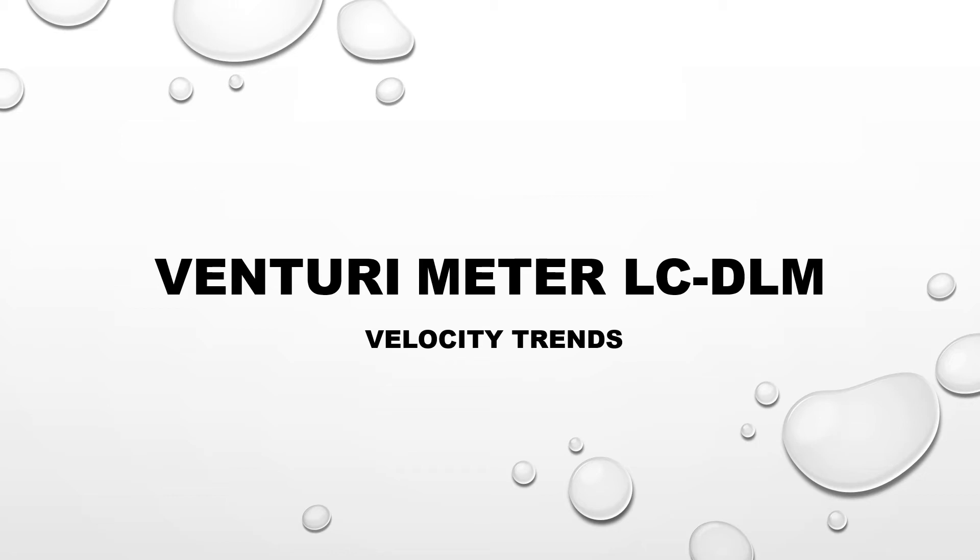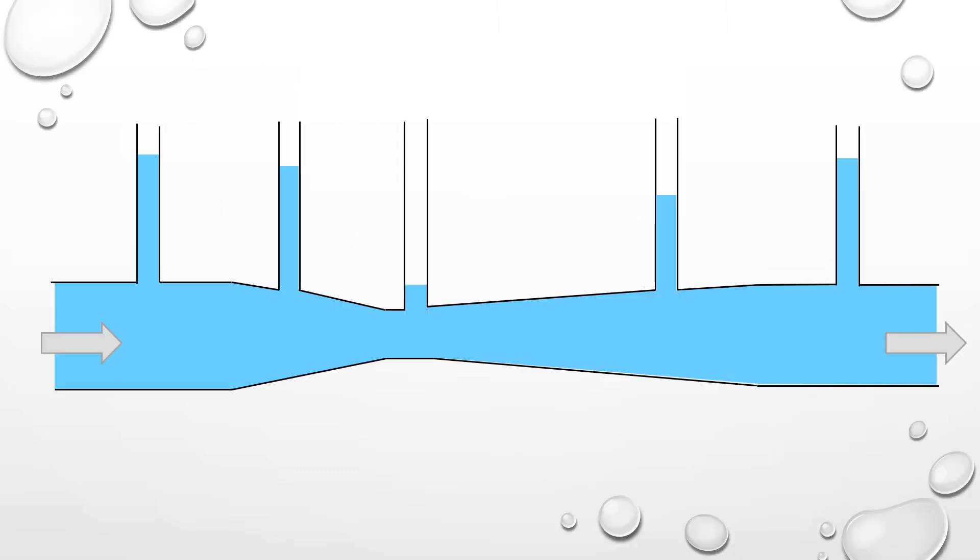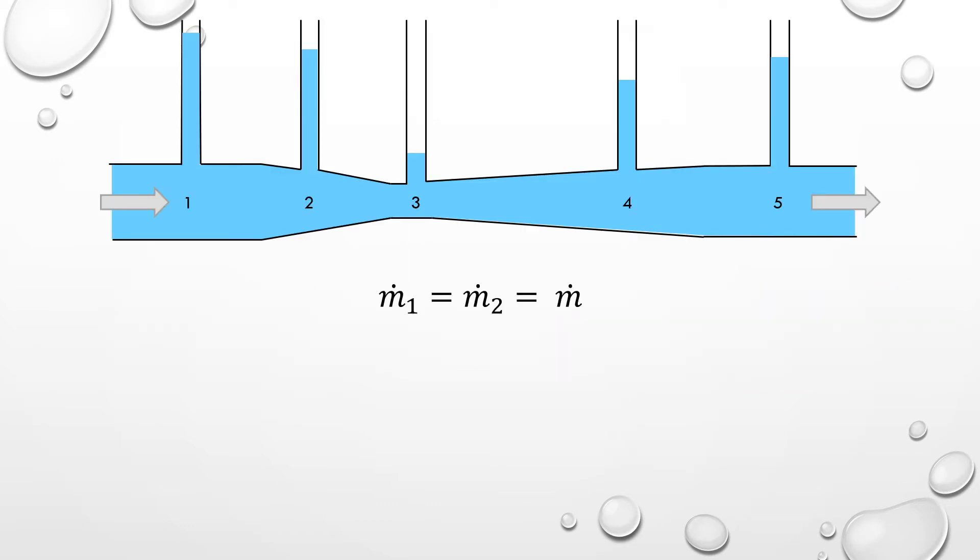Let's consider the velocity trend for fluid in a venturi meter with a changing diameter. We're going to derive the velocity in the venturi using the principle of mass conservation, or continuity. From basic principles, we know that mass cannot be created or destroyed. We also know that for a steady state process, there is no accumulation of mass in the system over time. Applying these principles to water flowing in a venturi, we can say that the mass flow rate at any two points in the venturi must be equal.